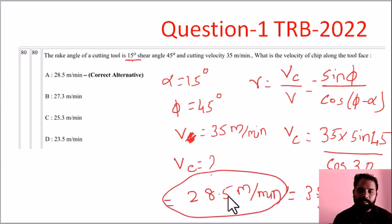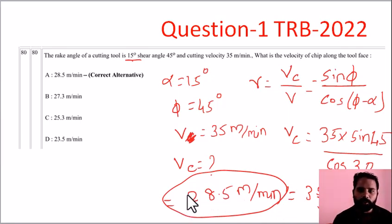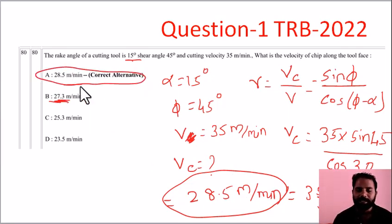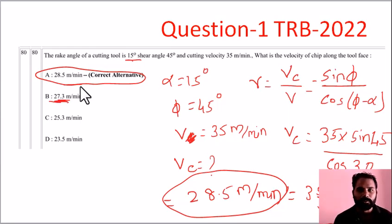For approximation: if you use root 3 as 1.7 and root 2 as 1.4, you will get approximately 27-something and can identify the correct option. In the GATE exam you can use a calculator for the exact value. In the TRB exam, use this shortcut method. Calculating precisely gives 28.5 meters per minute.